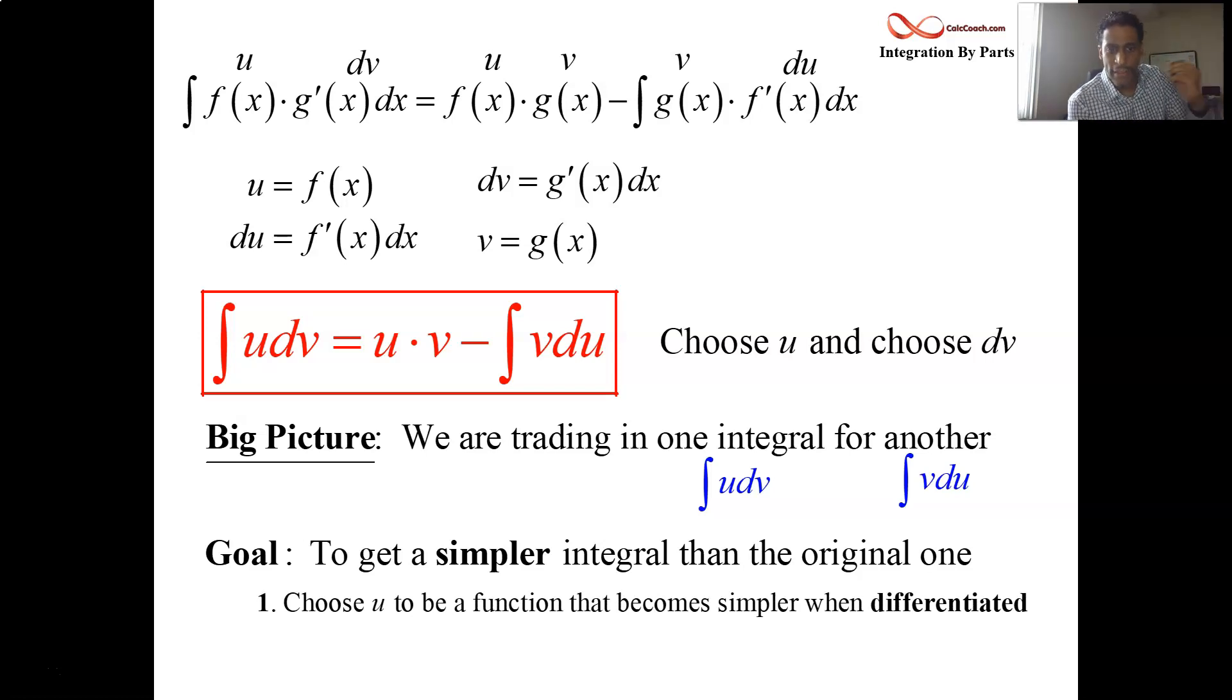Our job, choose u to be a function that becomes simpler when you take its derivative. That'll give you the du being simpler. But then at the same time, there's the dv part. And you want to make sure you choose, make sure the dv that you'll have then is something that you can integrate. You don't want to be, you don't want to have a dv in hand that you can't integrate because we need to be able to integrate that dv to get the v. And so, in the end, that will help you choose u and dv.